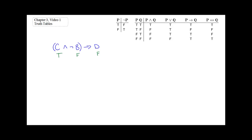How do we calculate the value of the whole? The main connective of this formula is the conditional arrow, and that's the value we're going to calculate last, because in order to know that value we need to know the value of the consequent — which we do — and the value of the antecedent, which we don't quite know yet. In order to determine the value of the antecedent, this portion between the parentheses, we need to know the value of both conjuncts because the connective there is a conjunction. We know the value of C, but we need to calculate the value of not B.